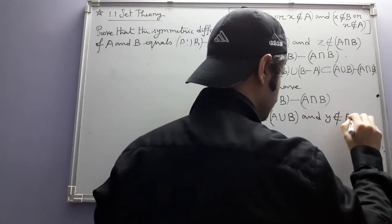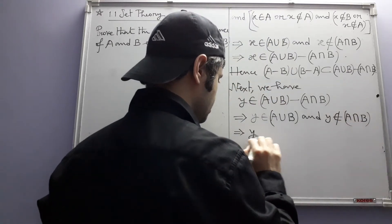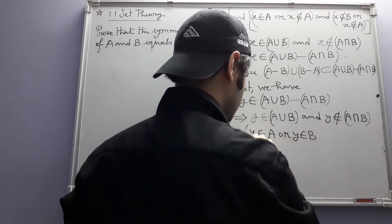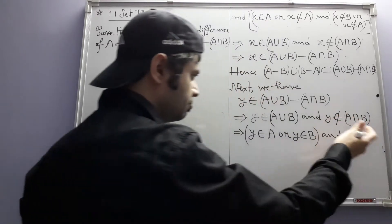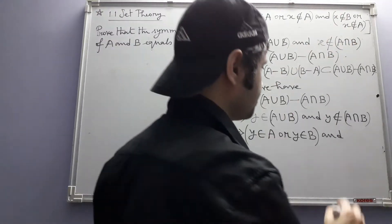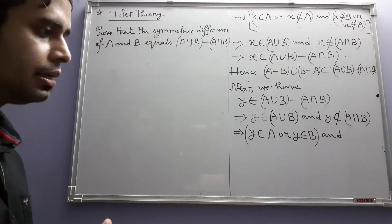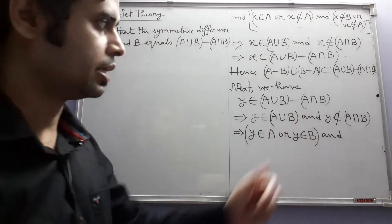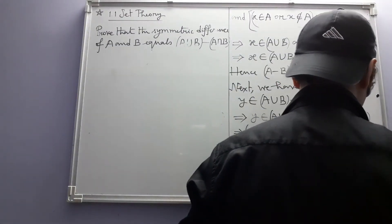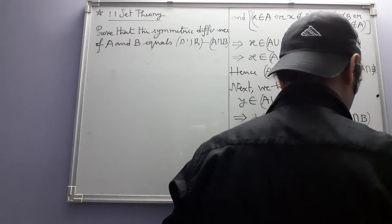Y does not belong to A intersection B, and this implies Y belongs to A or Y belongs to B. We can break it down: since Y does not belong to the intersection, it is not in at least one of the two sets, or it may not be in any one of them. So Y does not belong to A, or Y does not belong to B.